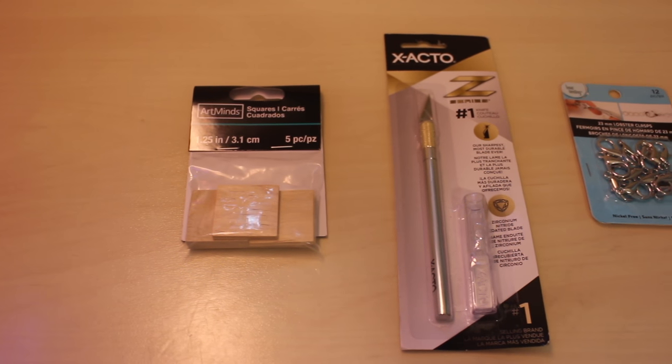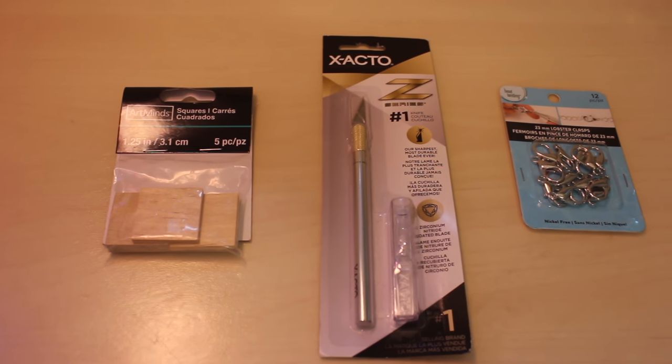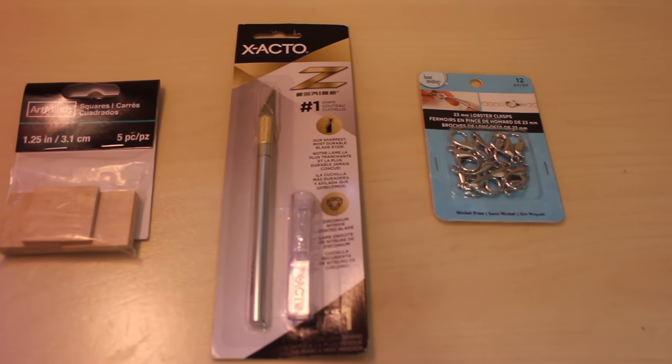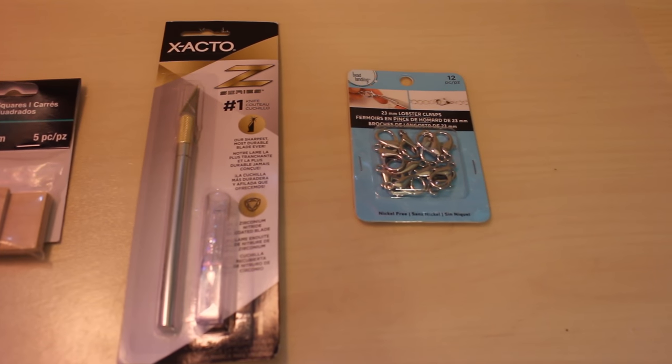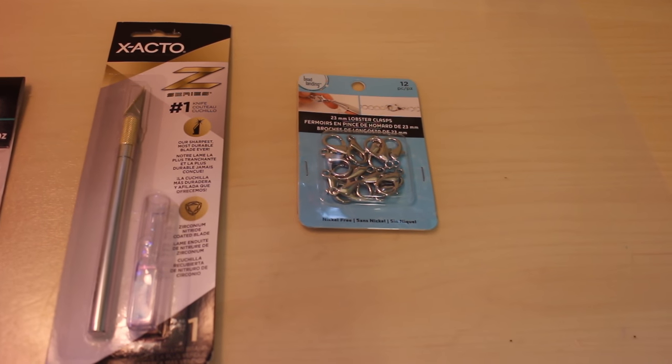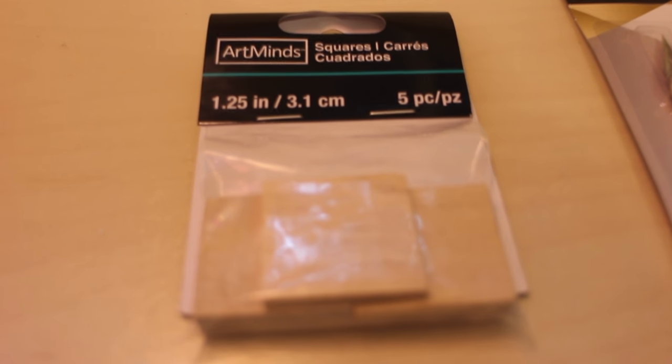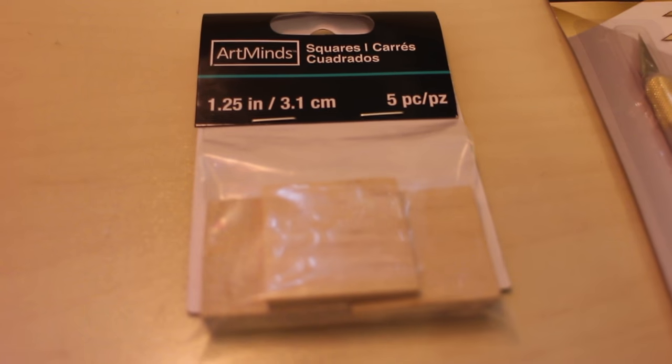What you'll need is these little wooden blocks. I got them at Michael's. Then an exacto knife - this is optional but you can use it for cutting the paper or helping you out with the glue later. I'll show you what I mean. And then little clips to make the actual keychain. This is what the blocks look like up close. I'll put a link down below where you can find them online.